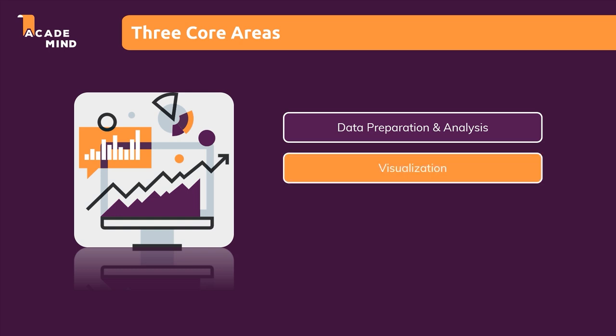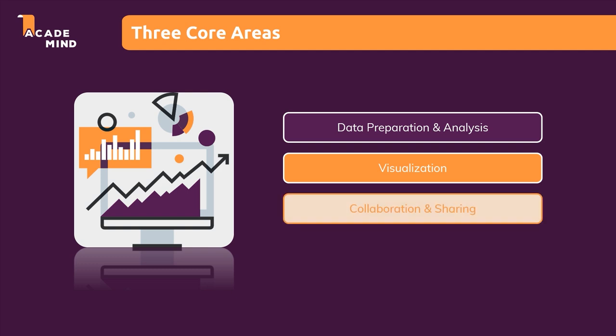With the data-related part finished, we can continue with the next core area: visualizations. You can present data as simple tables, but you can also create lots of different visuals — line charts, column charts, bar charts, or more advanced visuals like maps. The third and last core area of Power BI is collaboration and sharing. You can work on your own, but you can also work together in teams and share your results within your organization or even outside your organization.